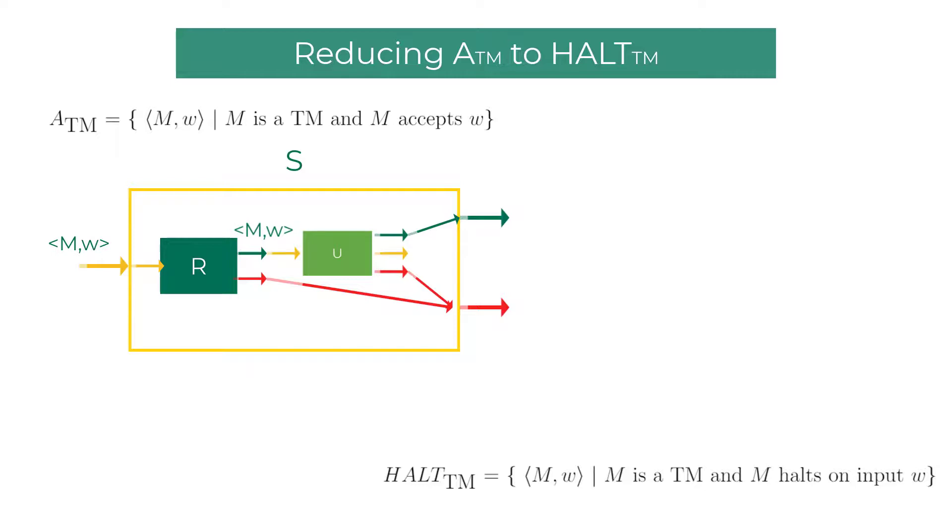Hence we are able to build a decider S for ATM using decider R for HALTTM. As no decider exists for ATM, the magic decider R for HALTTM does not exist in reality. Hence HALTTM is proved to be an undecidable language.